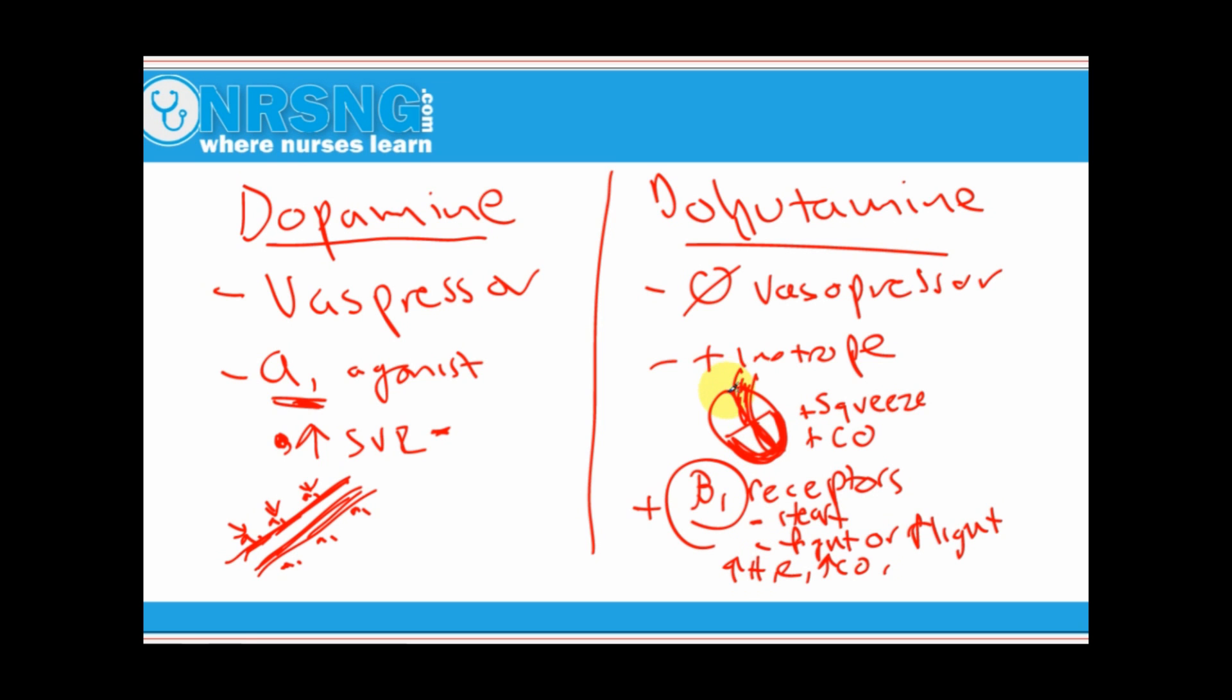The best way for me to remember this is dobutamine has a B in it. So here's dobutamine with a B, and I think of that as beta. So it's a beta agonist, so it's going to increase the effects of the beta receptors. Dopamine, on the other hand, there's no B in it, so it's an alpha agonist, and it's going to be a vasopressor.